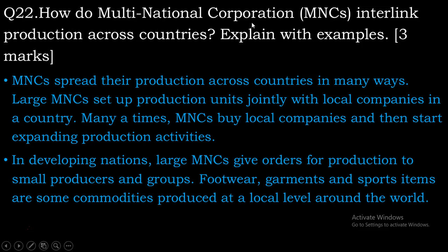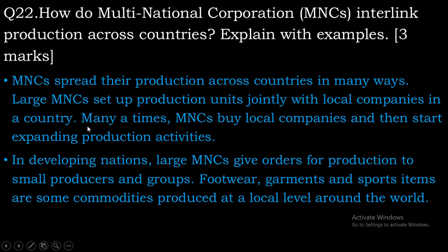Question number 22: How do multinational corporations interlink production across countries? Explain with examples. So jitni bhi MNCs hote hai, ye MNCs apna production alag alag countries mein kaise jod ke rakh sakti hai, kaise connected rakh sakti hai? Kisi badi company ka production kahin pe ho raha hai, manufacturing kahin pe, assembling kahin pe, marketing kahin pe, customer service kahin pe — is tarah se multinational companies kaam karti hai. MNCs spread their production across countries in many ways.